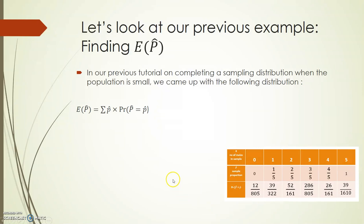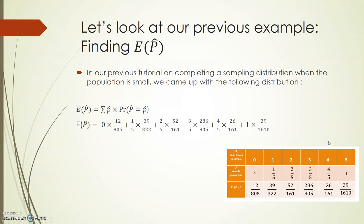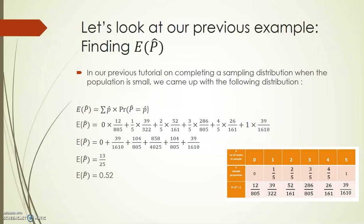Let's start with the mean. The expected value of p-hat is the value of p-hat multiplied by its probability, and then we add all our answers together. So I'm simply going to say: 0 times 12/805, plus 1/5 times 39/322, plus 2/5 times 52/161, plus 3/5 times 286/805, plus 4/5 times 26/161, plus 1 times 39/1610. When I add them together, I get the expected value of p-hat is 13/25, and the approximate value of this is 0.52.